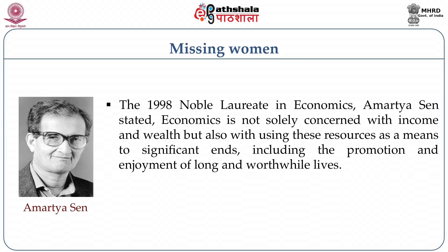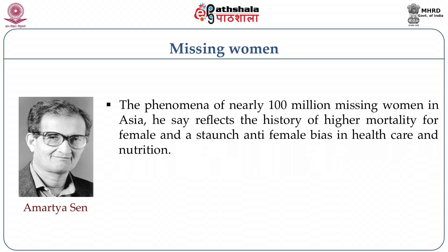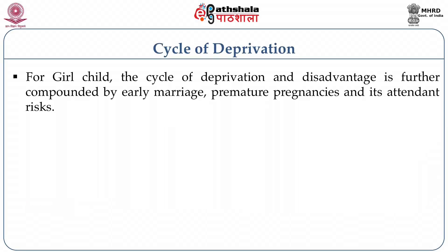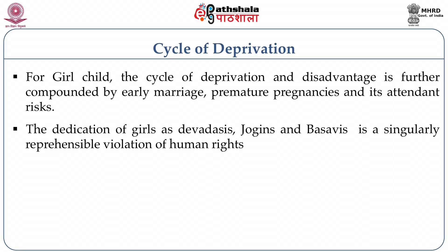Amartya Sen spoke of 100 million missing women, reflecting the higher mortality for females and the staunch anti-female bias in healthcare and nutrition. He and a colleague examined hospital records in Bombay and concluded that women are taken to the hospital when they are more seriously ill than men. The girl child suffers from a cycle of deprivation and disadvantage, further compounded by early marriage, premature pregnancies, and in many regions the dedication of girls as Devdasis, Jogins, and Basavis, which represents a violation of human rights.